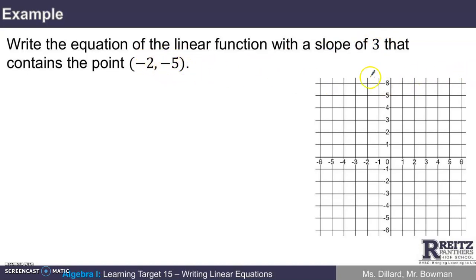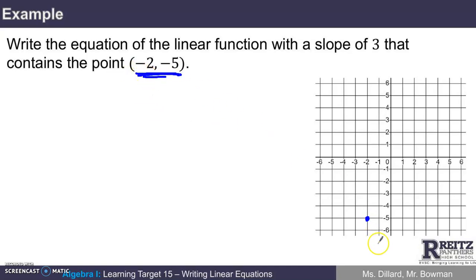One way to solve this problem, given a graph, is to make a picture of what we know. One thing I know is that the point negative 2, negative 5 has to be a point on the graph. The point negative 2, negative 5 has an x-coordinate of negative 2 and a y-coordinate of negative 5 — it would be right there. So the point we know is this one right here.